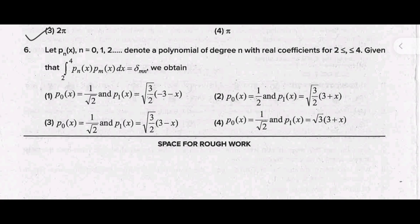Next question is: let P_N(x), N equal to 0, 1, 2 and so on, denote a polynomial of degree N with real coefficients for 2 less than and less than 4. Given that integration from 2 to N of P_N(x)P_N(x)dx equal to δ_MN, we obtain the correct answer is option 3: P_0(x) equal to 1 by root 2 and P_1(x) equal to root 3 by 2 into bracket 3 minus x.